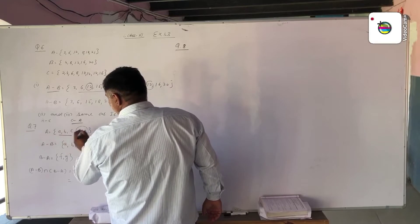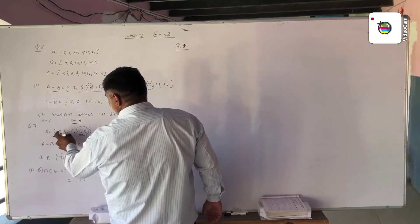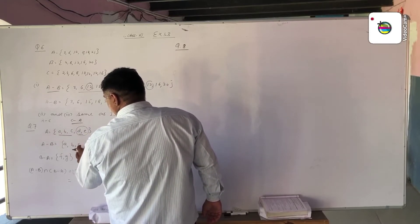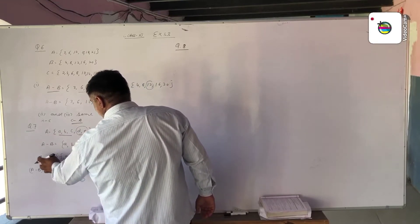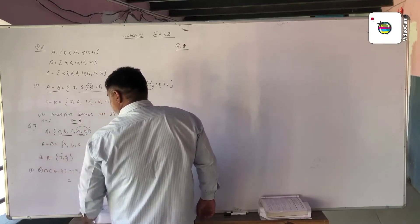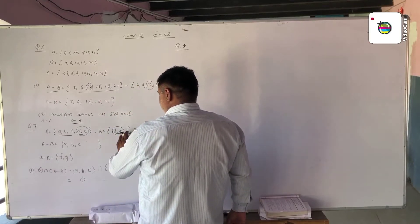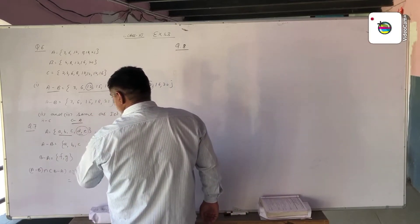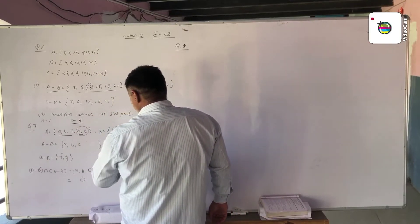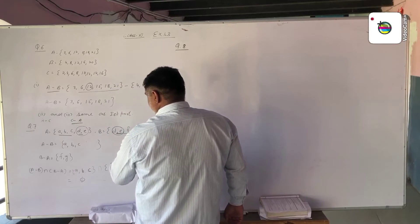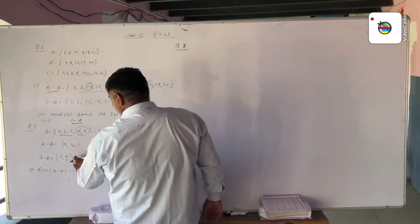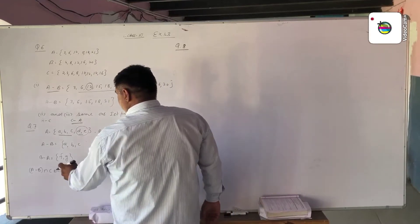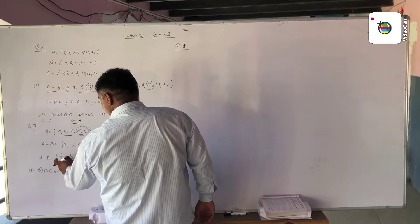So the remaining elements of A are A, B, C. This is A difference B. Now for B difference A, we take elements of B which are not in A. F and G are not in A, so B difference A is {F, G}.